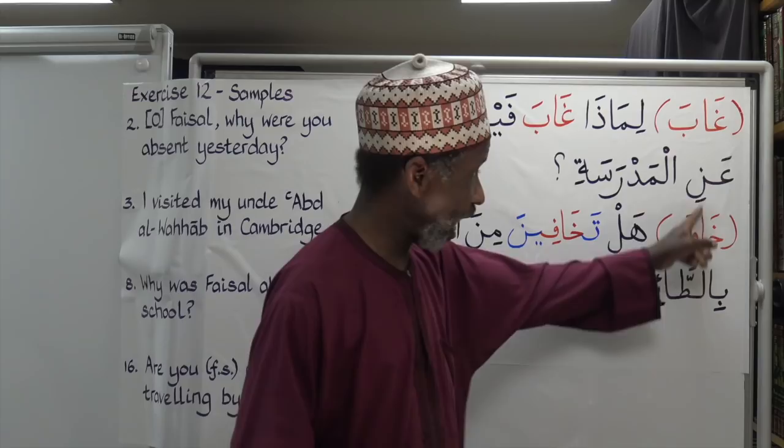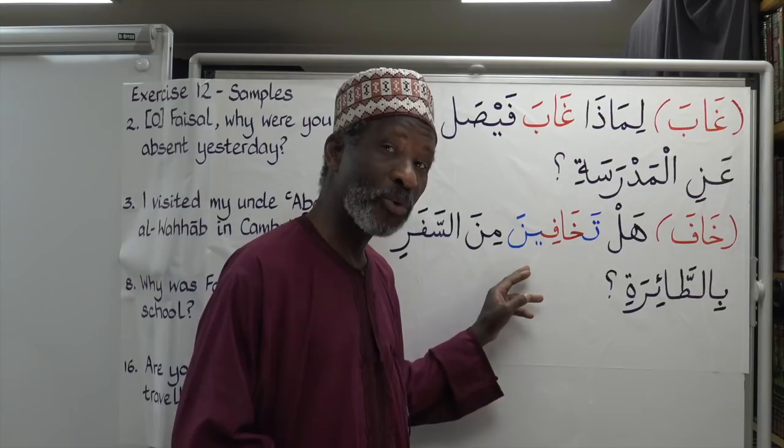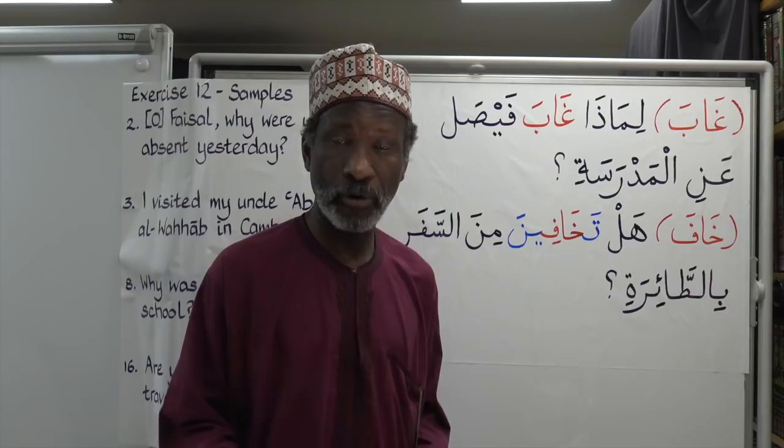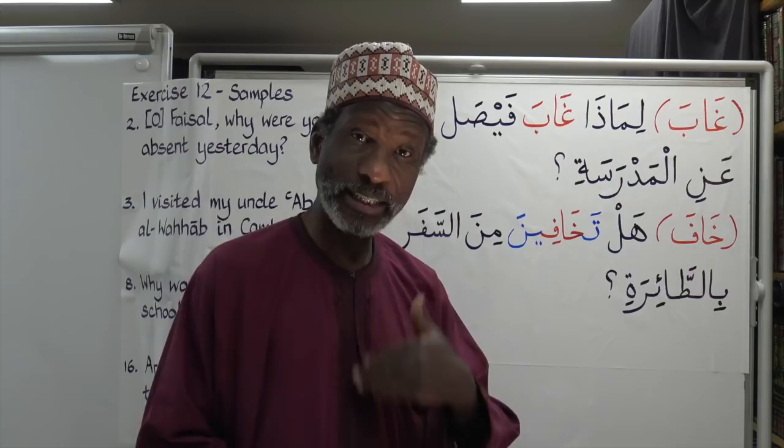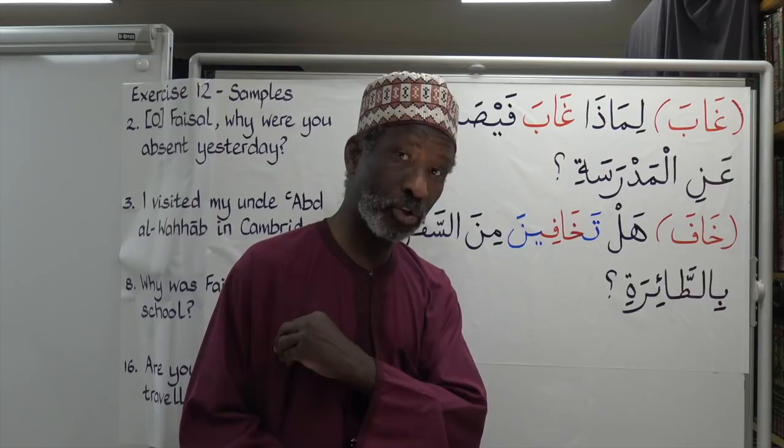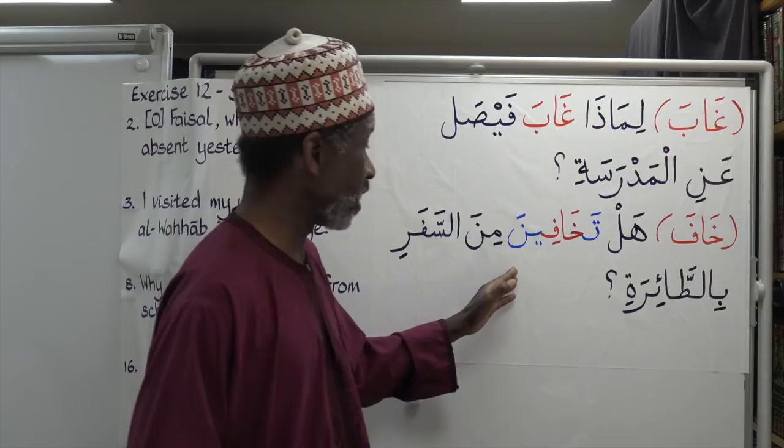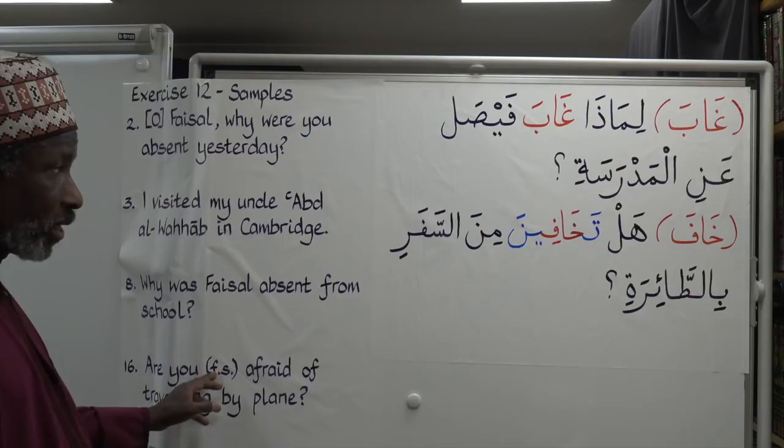Khafa — you have the alif there. Khafa, Yakhafu. Now, whenever you are speaking to anybody in front of you in the present tense, you have to start with ta. If you are speaking to a single female, the ending of your present tense should be the eena ending.